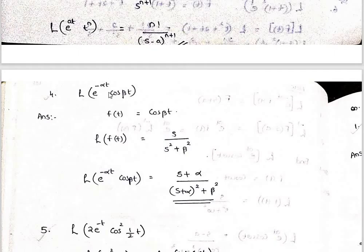Now L of e raised to minus αt times cos(βt). Here f of t is cos(βt). The Laplace transform of cos(βt) is s divided by s squared plus β squared. Here a is minus α, so s becomes s minus a which is s plus α. The answer is (s plus α) divided by (s plus α) squared plus β squared.